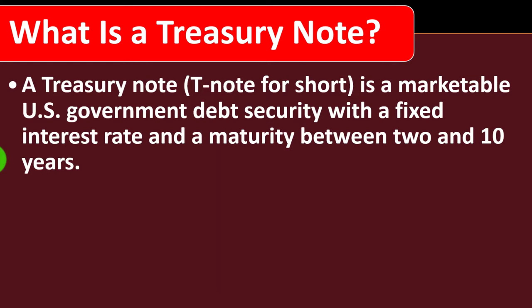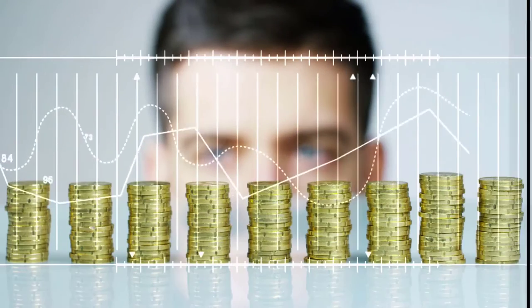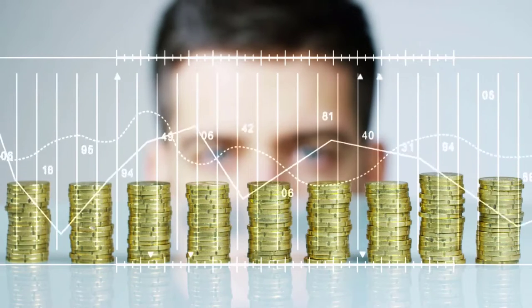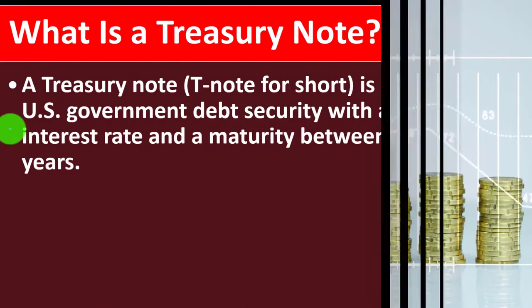A Treasury Note, or T-Note for short, is a marketable U.S. government debt security with a fixed interest rate and a maturity between 2 and 10 years. We're looking at a fixed income type of investment.